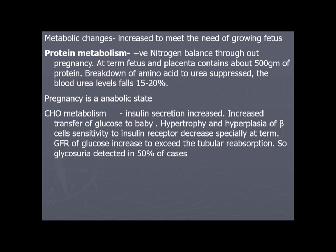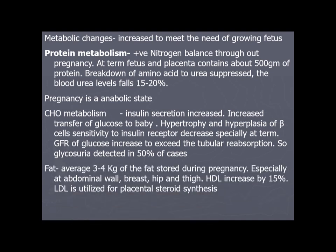Carbohydrate metabolism: insulin secretion increases to transfer glucose to the baby; beta cells undergo hypertrophy; sensitivity of insulin receptors decreases. GFR of glucose increases to exceed tubular reabsorption, so glycosuria can be seen in 50% of pregnant cases. Fat: an average of 3–4 kg of fat is stored during pregnancy, especially at the abdominal wall, breast, hips, and thighs. HDL increases by 15% and LDL is utilized for placental steroid synthesis.